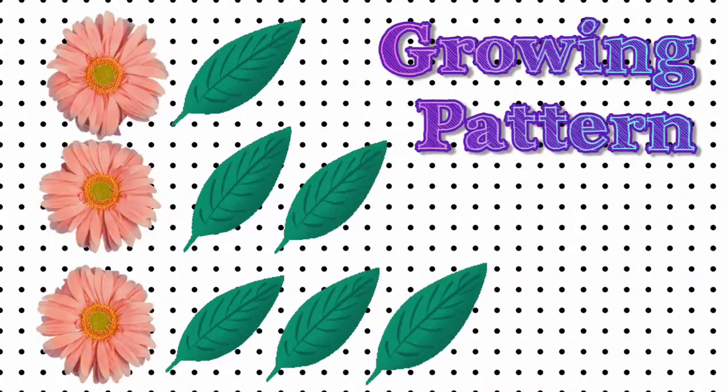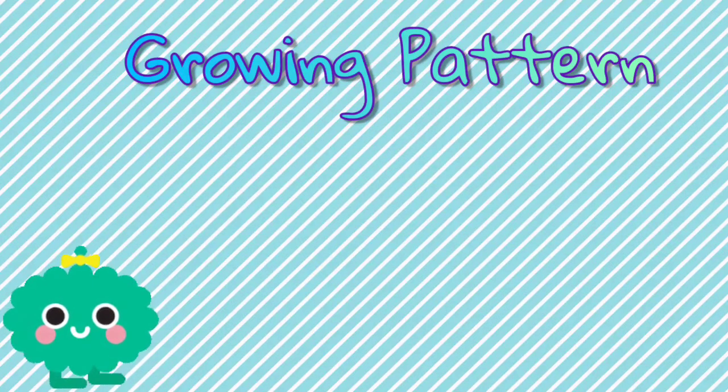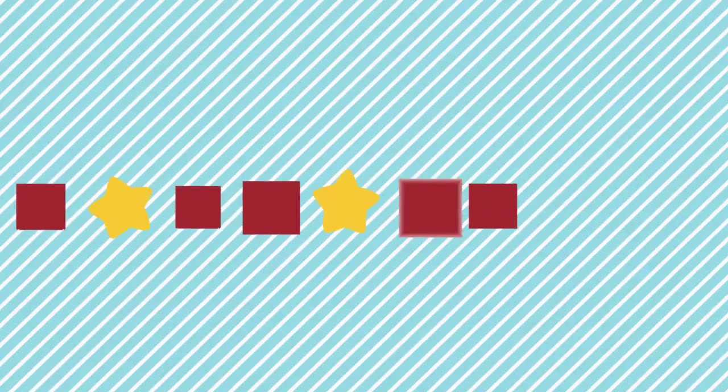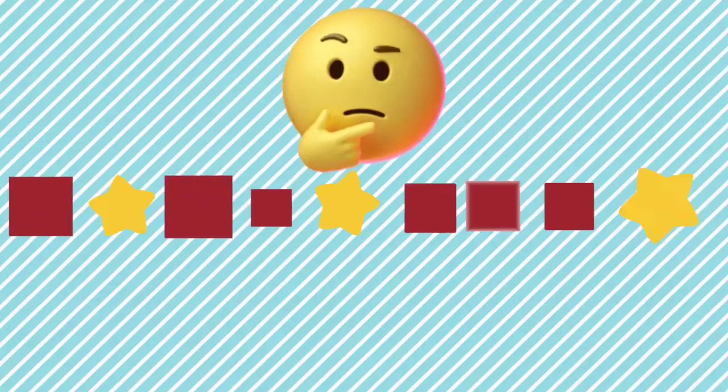A growing pattern is a pattern where something is added every time the sequence repeats. Let's try another example. Square, star. Square, square, star. Square, square, square, star. What comes next? Next we have square, square, square, square. What do you think is the rule of this pattern? The rule is to add one more square extra after each star.